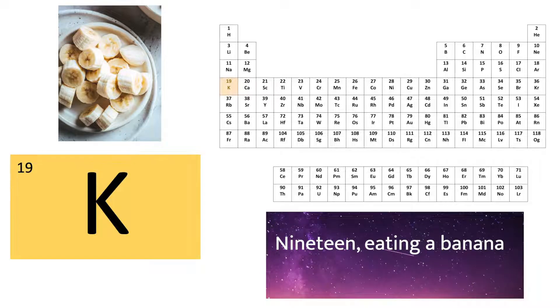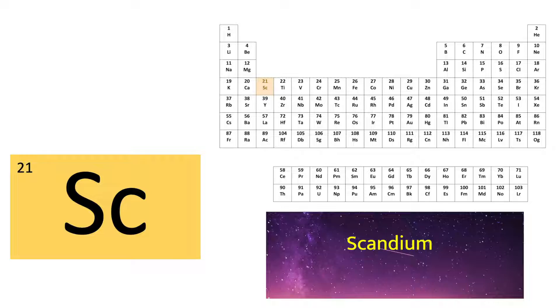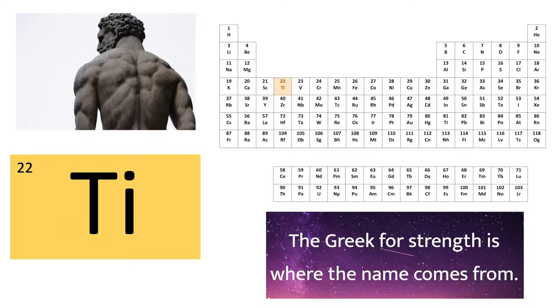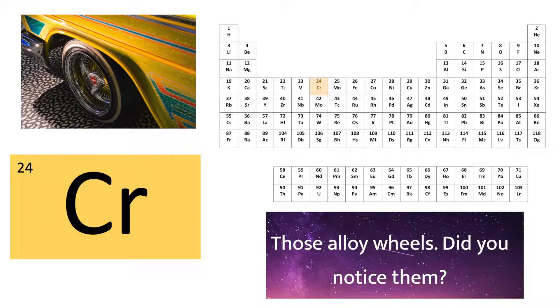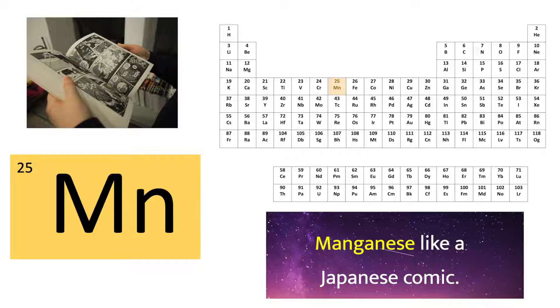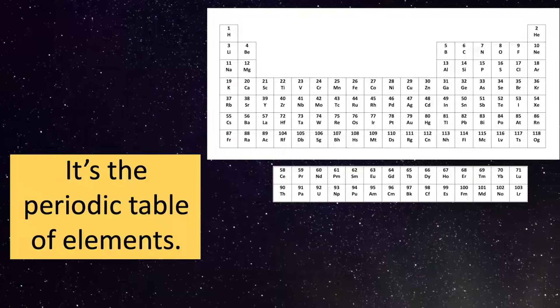19, eating a banana. Potassium can help your body armor. Number 20, you need plenty. Calcium gives you a smell to envy. Scandium, titanium. The Greek for strength is where the name comes from. Vanadium, chromium. Those alloy wheels, did you notice them? Manganese like a Japanese comic. Put it on repeat until you've got it.